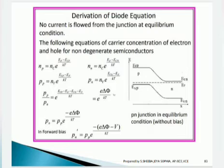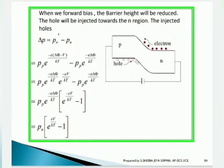We can rewrite pp / pn = e^(eΔφ / kT), taking the entire term as e^(eΔφ / kT). Rewriting: pn = pp · e^(−eΔφ / kT). At forward bias condition, this changes to pn = pp · e^(−e(Δφ − V) / kT). Since we are in forward bias, the barrier height is reduced as we know.